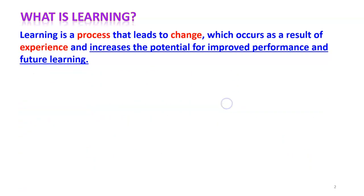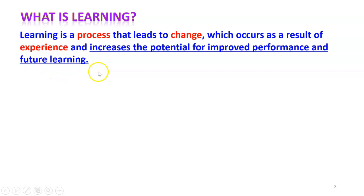So first of all, what is learning? The definition for learning is: learning is a process that leads to change which occurs as a result of experience and increases the potential for improved performance and future learning. I have marked with red color three key words: process, change, and experience.